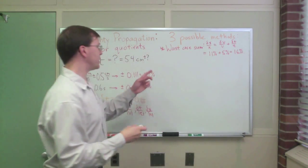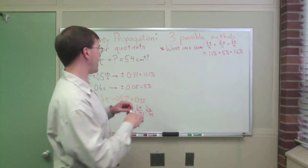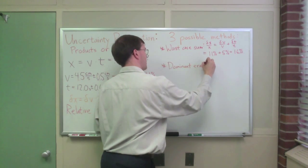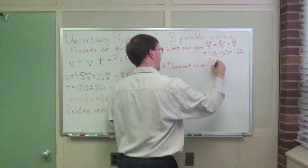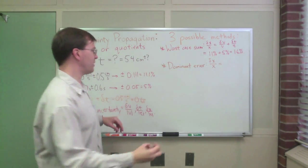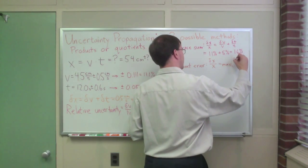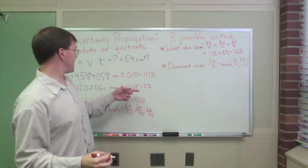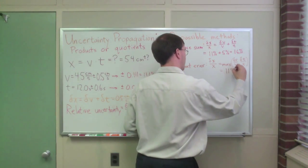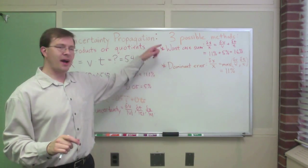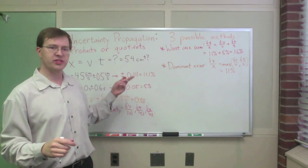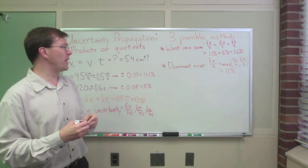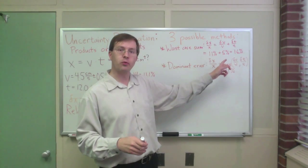Next method that we can use is to look at the dominant error. Remember, the dominant error method is where we just take the largest one, delta x over x is equal to, which one's bigger? Well, it's going to be the max of delta v over v and delta t over t. Again, just the largest relative uncertainty. Here I look at it and I say, alright, 11% it is. The concepts behind these are exactly the same as they were for uncertainty propagation with sums and differences. It's just we have to use relative error instead of absolute error here, and it's working out fine. You'll notice, by the way, since relative error is always unitless, that guarantees I have no problem adding units here.